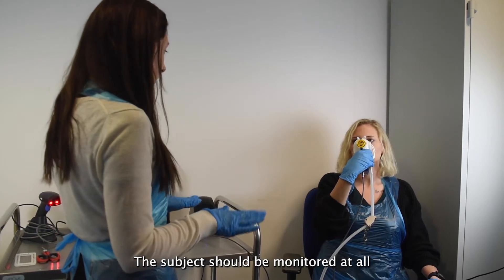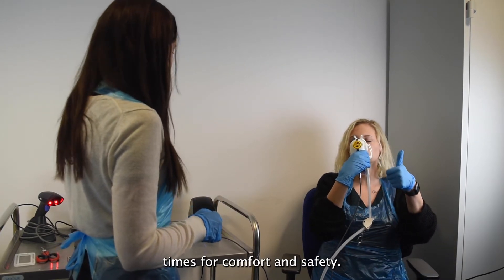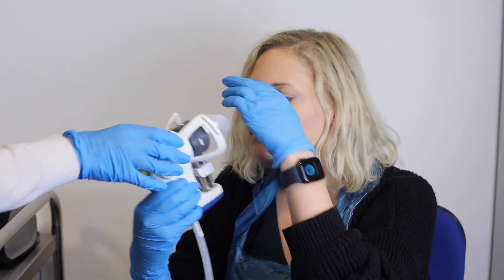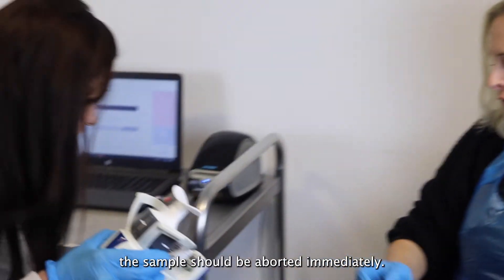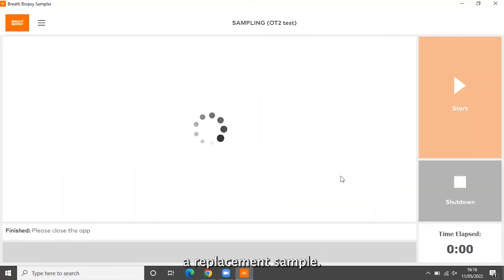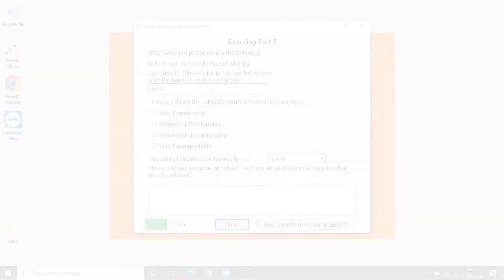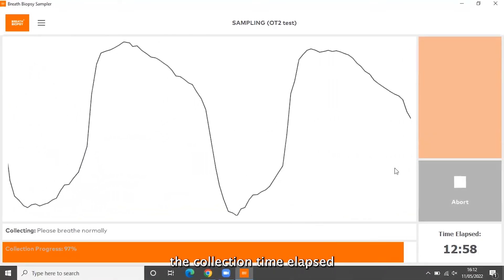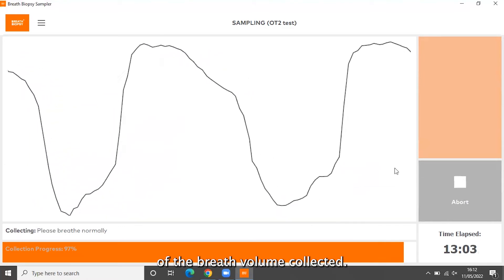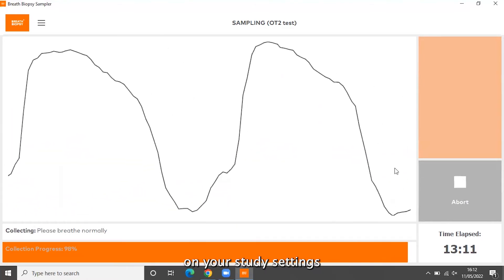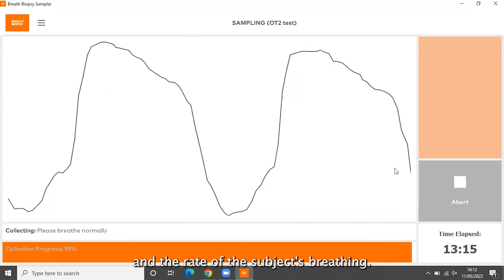The subject should be monitored at all times for comfort and safety. If the subject wishes to stop the procedure, the sample should be aborted immediately. If they are willing to provide a replacement sample, a new breath biopsy kit should be used. During the breath collection, the software displays the collection time elapsed and the percentage of the breath volume collected. Collection time may vary and is dependent on your study settings and the rate of the subject's breathing.